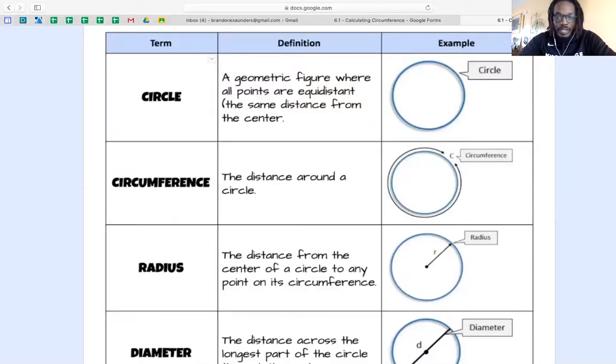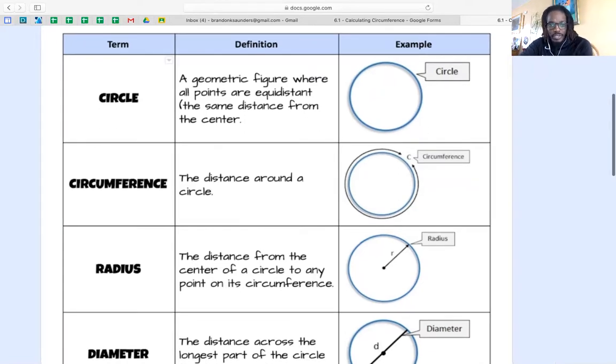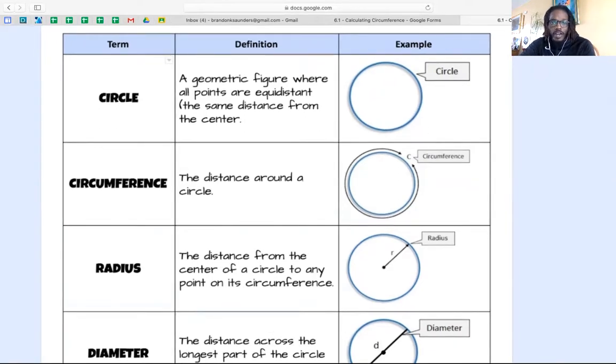So first let's just review, really quick recap of what we're looking at when we look at parts of a circle. We know that a circle is a geometric figure where all points are equidistant, meaning they are the same distance from the center.